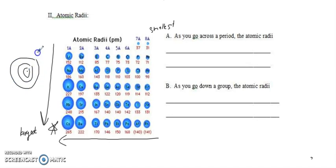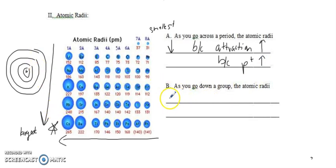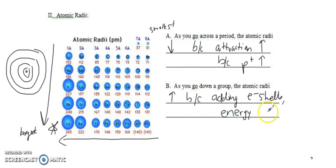So here are our largest atoms, and here are our smallest. In general, as you go across a period, the atomic radii decreases because attraction is going up. When there's high attraction, the electron cloud gets pulled in, and attraction is going up because the number of protons is also going up. As you go down a group, the atomic radii increases because you're adding electron shells — or energy levels. We're talking about that principal quantum number. It's like adding layers to the onion, basically.